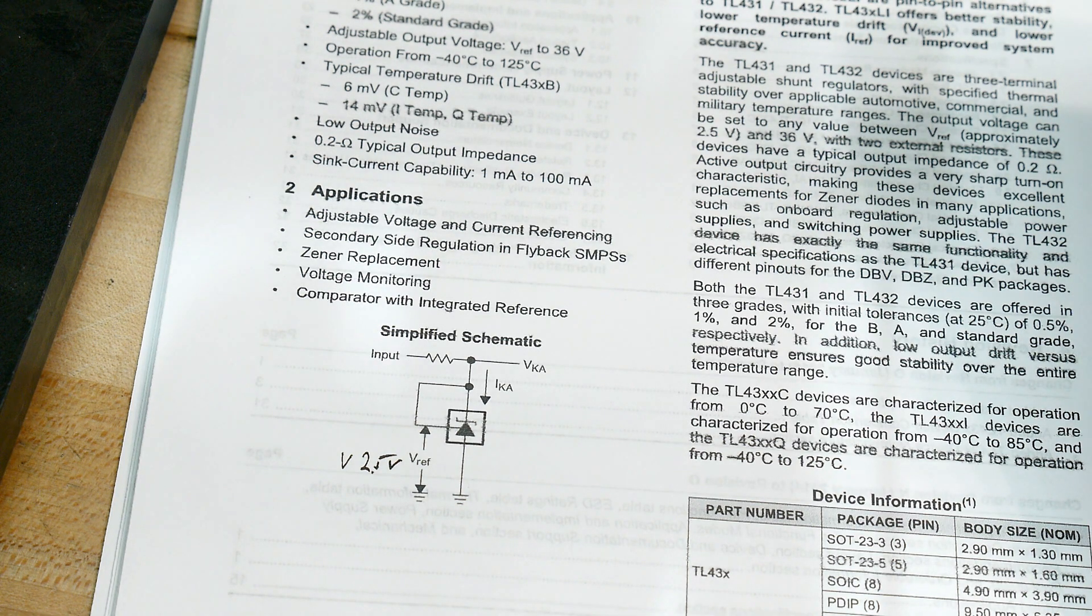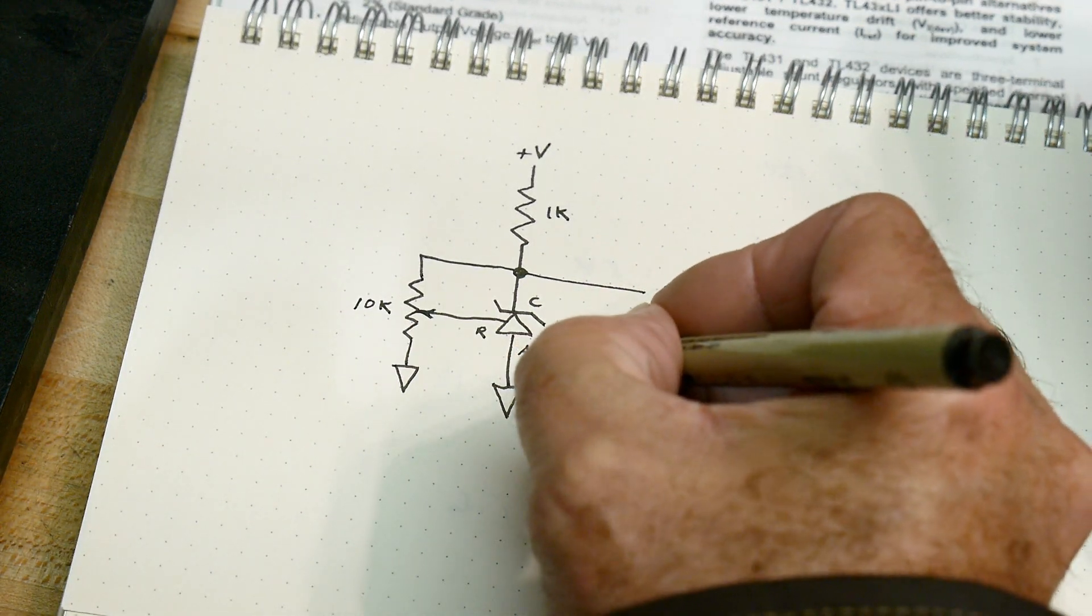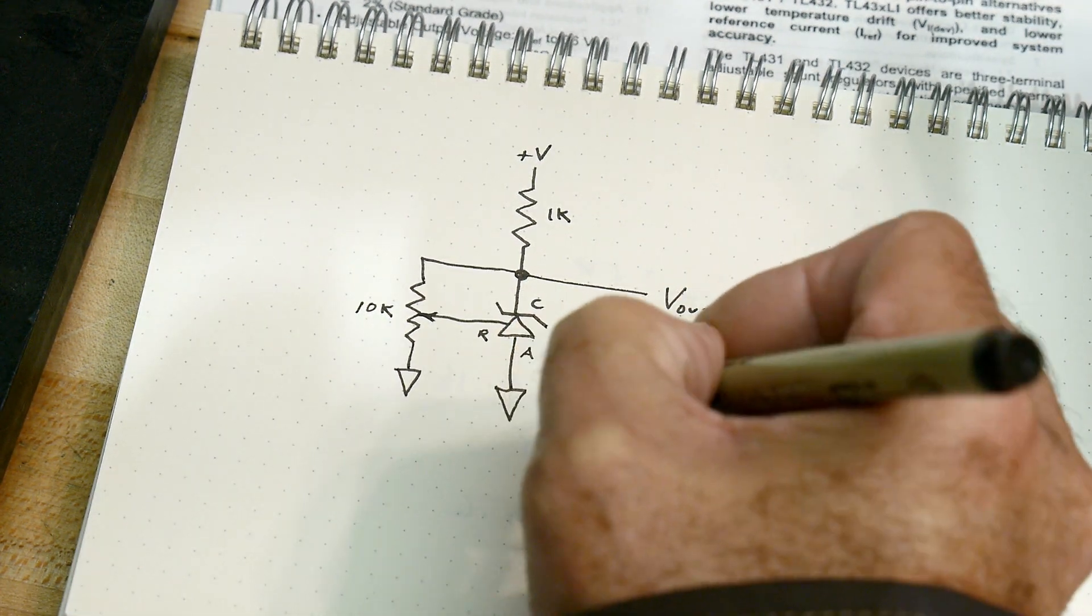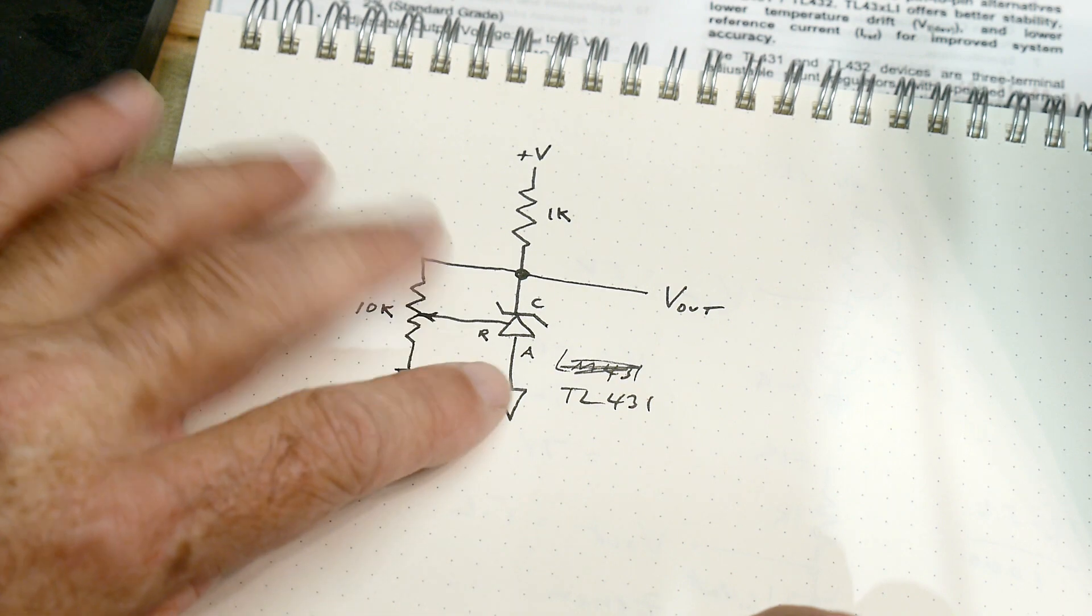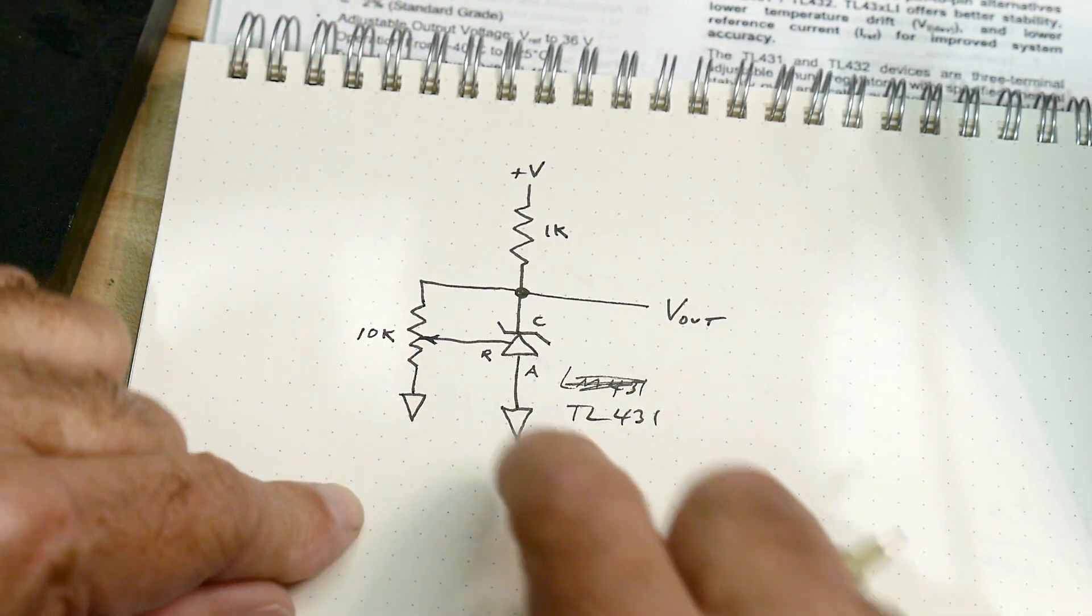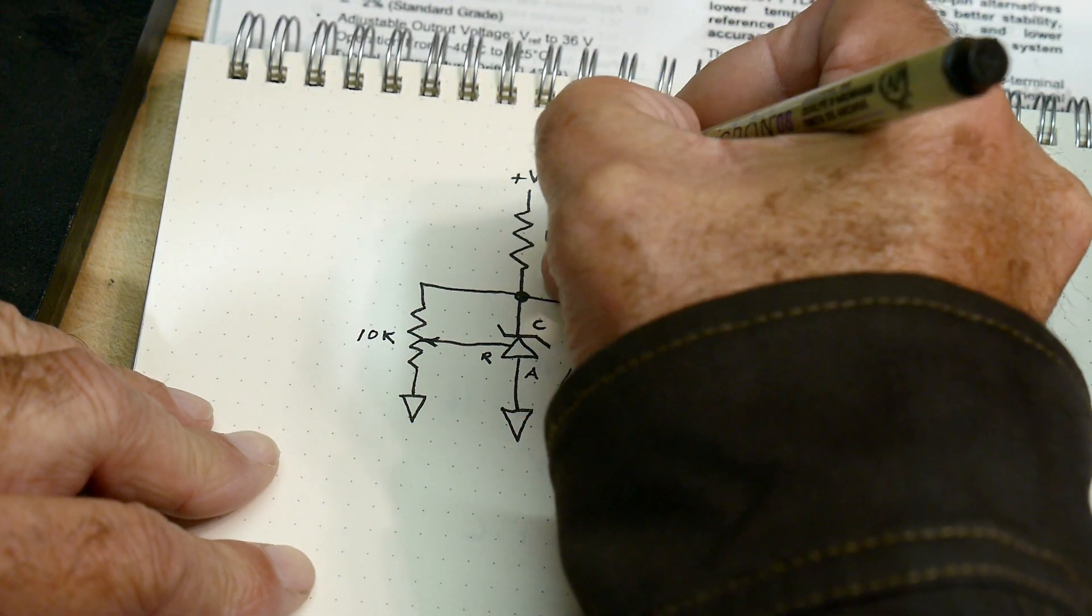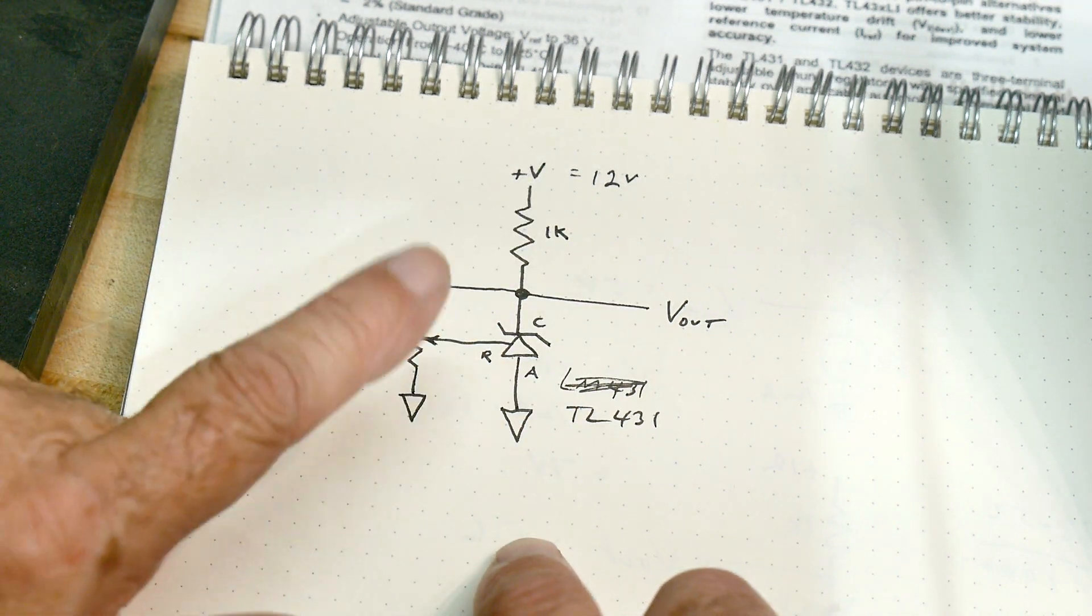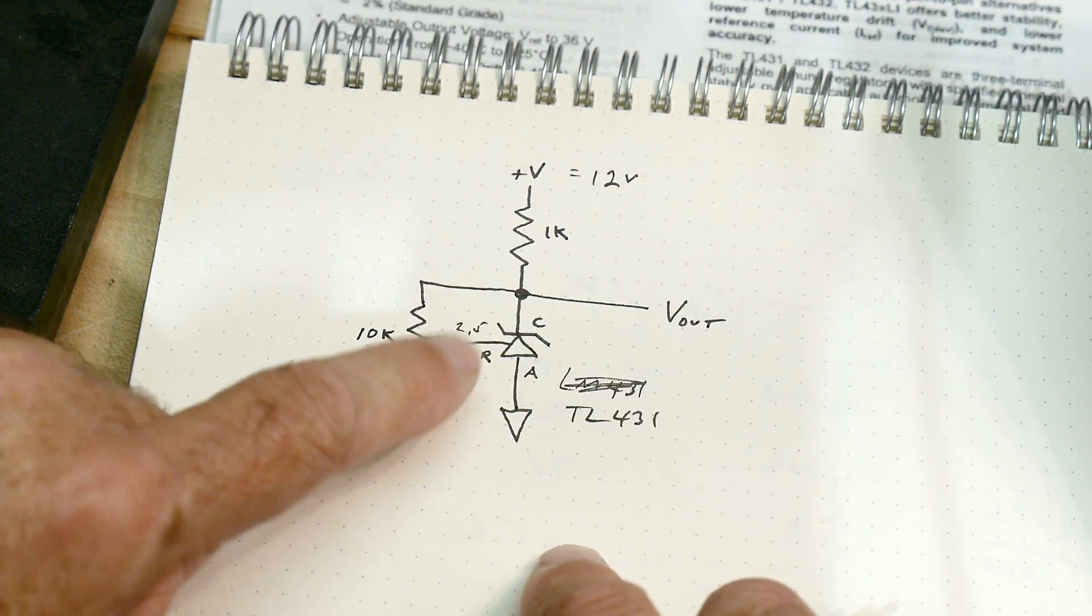And let me show you the schematic of what we're going to be looking at. I'm going to be taking our TL431. And we're going to hook it up this way. Now remember, we have our cathode and our anode. We have our 1k resistor. We have, let's say this is 12 volts. What's the voltage going to be on the output? Well, the reference voltage is always going to be 2.5. So we're going to have 2.5 here.